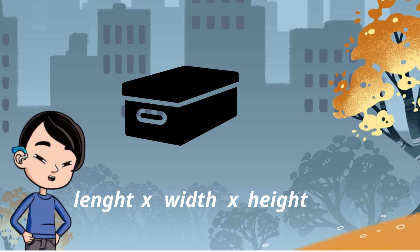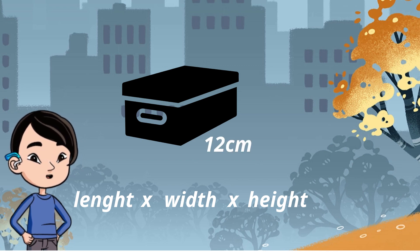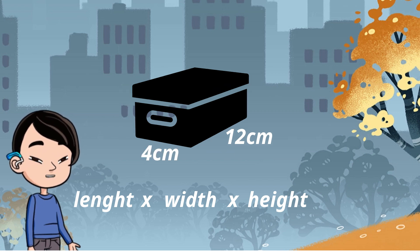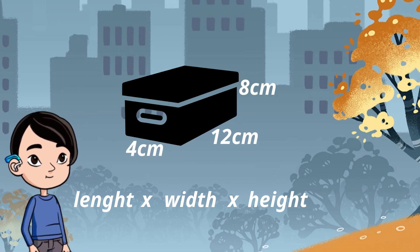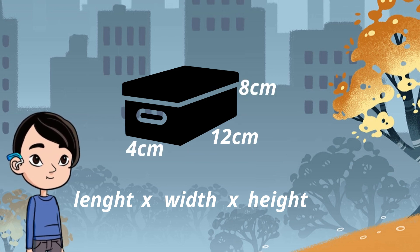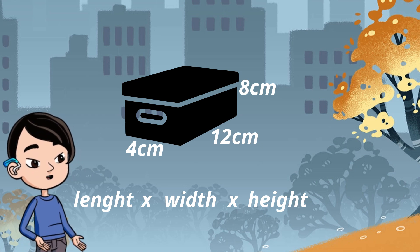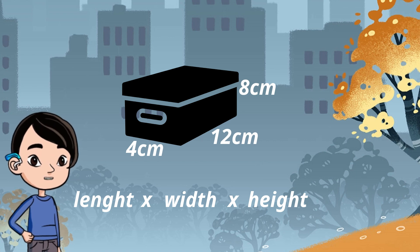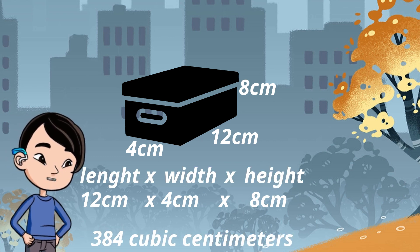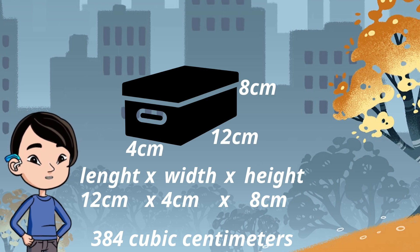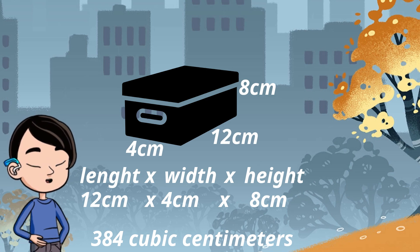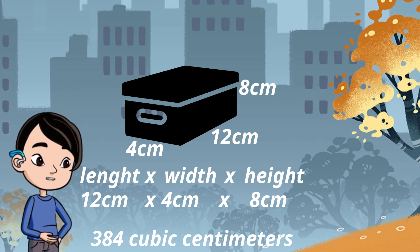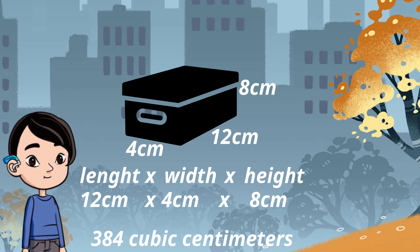Take a look at this rectangular prism. It has a length of 12 centimeters, a width of 4 centimeters, and a height of 8 centimeters. To find the volume, we multiply these three dimensions: 12 centimeters times 4 centimeters equals 48 centimeters, and 48 centimeters times 8 centimeters equals 384 cubic centimeters.